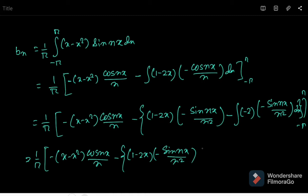Tracking the signs, we ultimately get minus cos(nx)/n³ from the final integration.